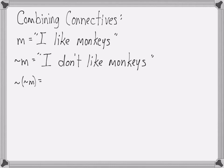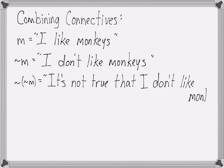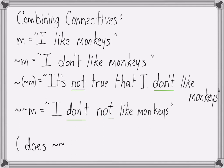There are ways of combining connectives. If m stands for 'I like monkeys', then the negation of m is 'I don't like monkeys', and then the negation of the negation of m is 'it's not true that I don't like monkeys'. Another way to say that that sounds more natural is 'I don't not like monkeys'. Notice how the brackets disappeared. Sometimes it's okay to do that and sometimes not.